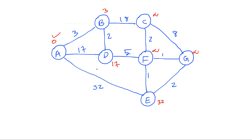We update those values: b=3, d=17, e=32. We choose vertex b (smallest distance 3) as the next known vertex. B has neighbors a, d, and c; a is already known so we consider d and c. Distance to c: 3+18=21 (less than infinity, update). Distance to d: 3+2=5 (less than 17, update). So dist(c)=21 and dist(d)=5.